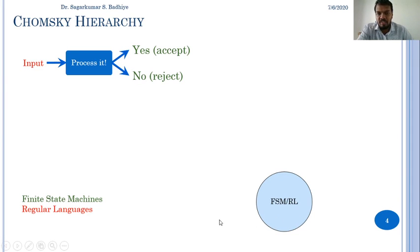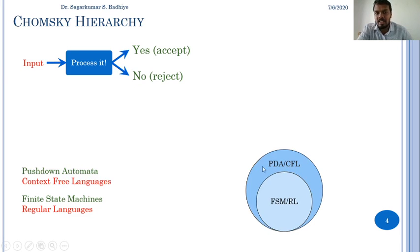The simplest form of language is the regular language that is represented by finite state machines.